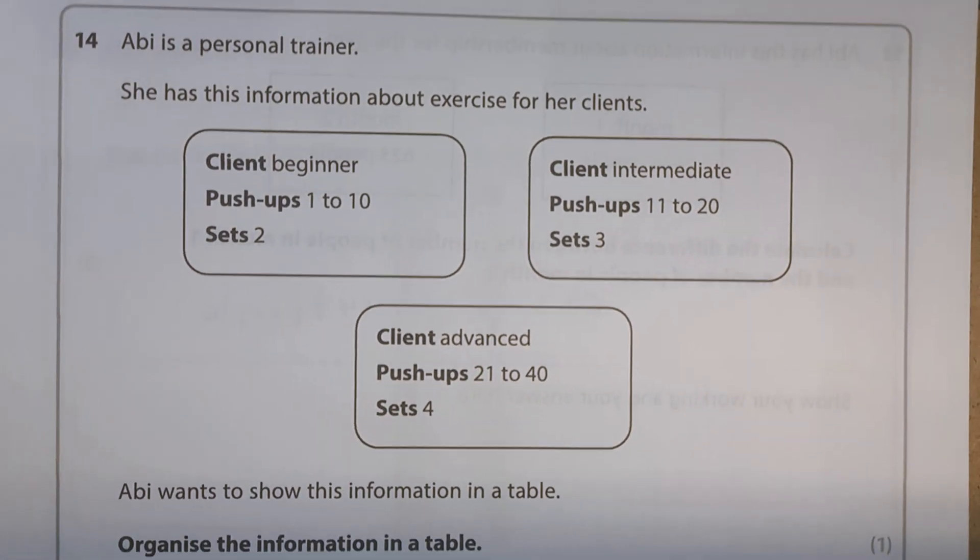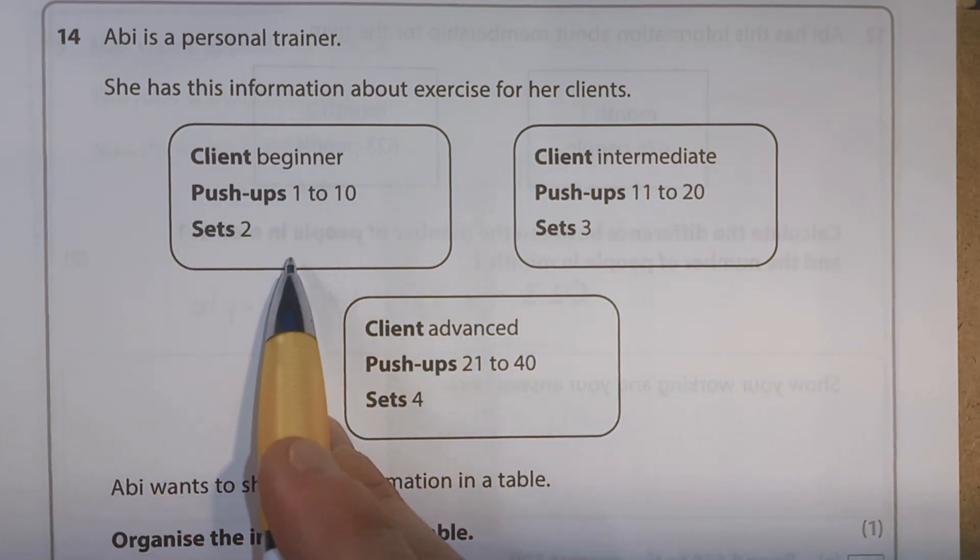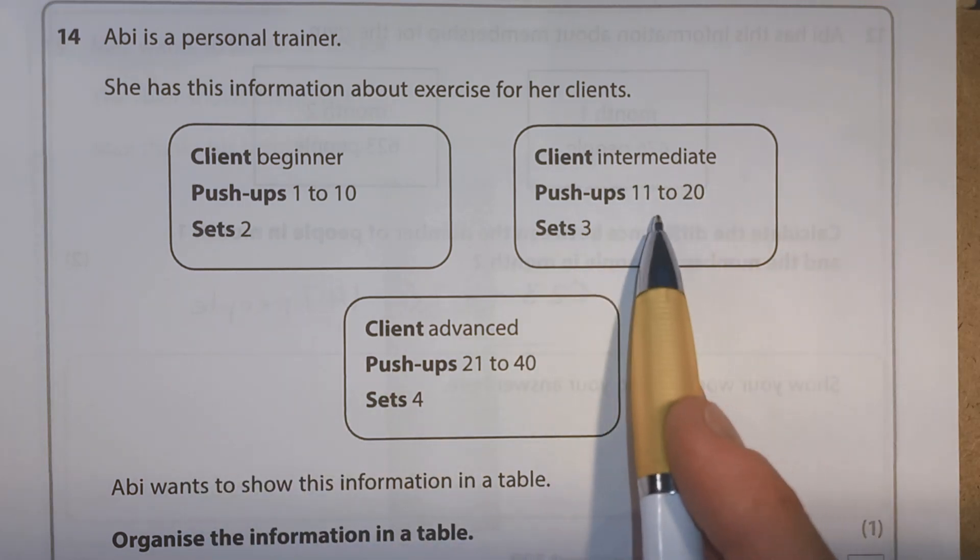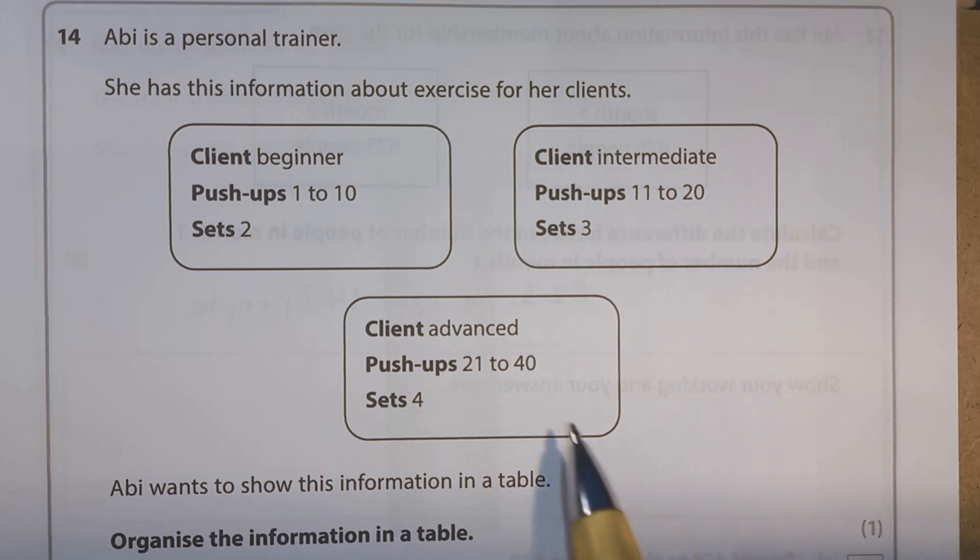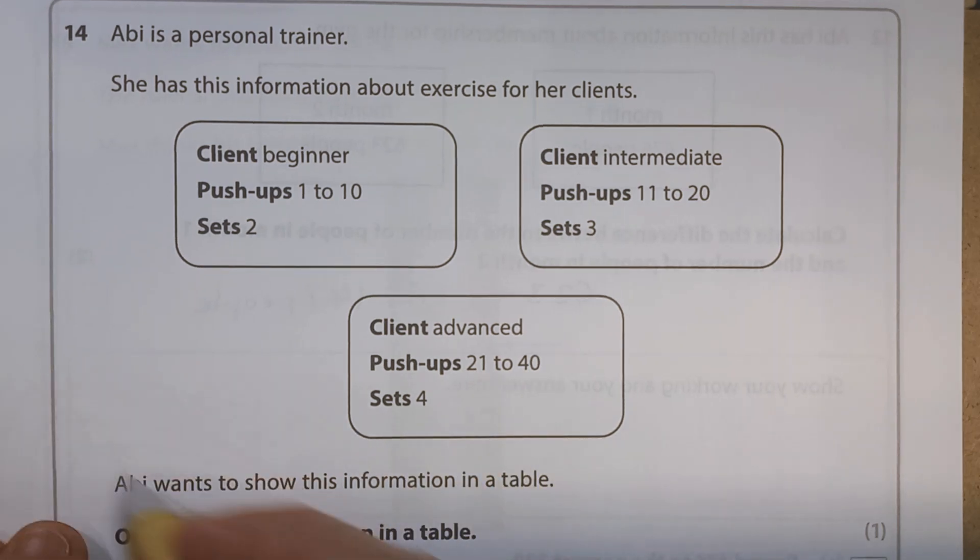Question 14. Abbey is a personal trainer. She has this information about exercise for her clients. So client, this client is a beginner. They can do between 1 and 10 push-ups and 2 sets. Client 2, intermediate. They do between 11 and 20 push-ups and they do 3 sets. And their advanced client, they do between 21 and 40 push-ups and 4 sets. Abbey wants to show this information in a table. Organise the information in the table. Right, well, I'm going to do a small table. I'm going to do it up here, squash it in, but just so that we can see how we do it. Well, we've got three bits of information.